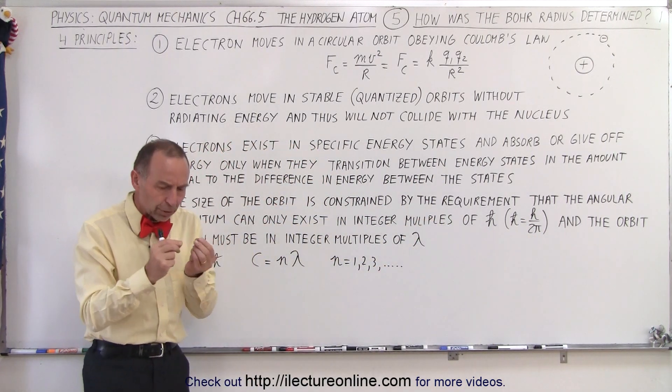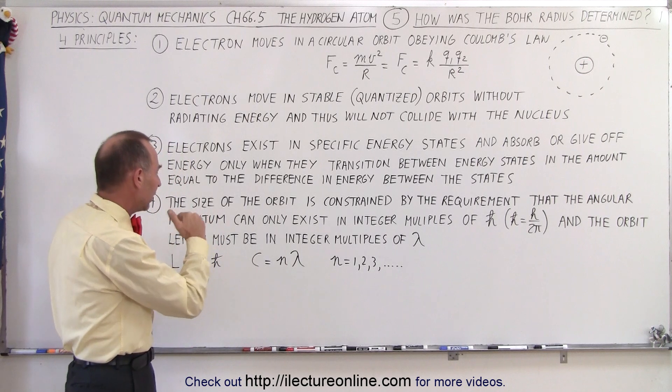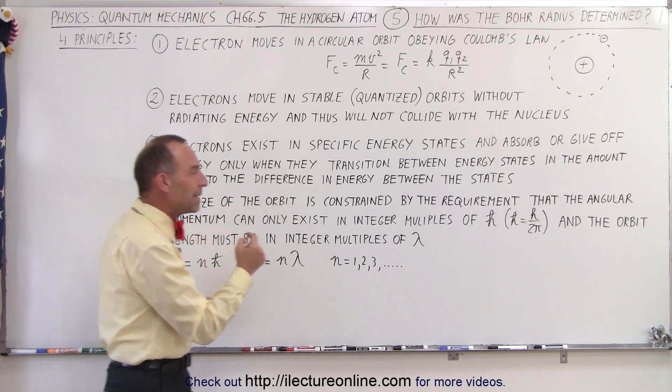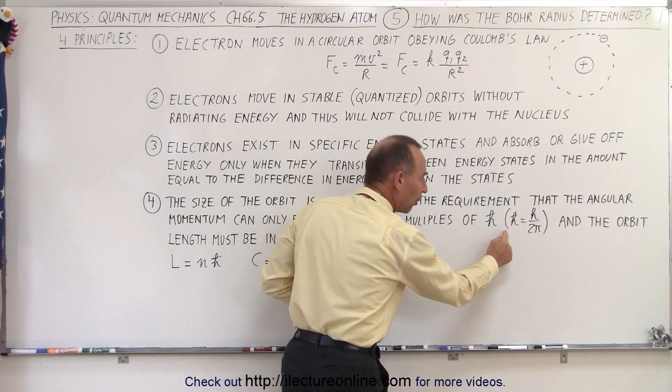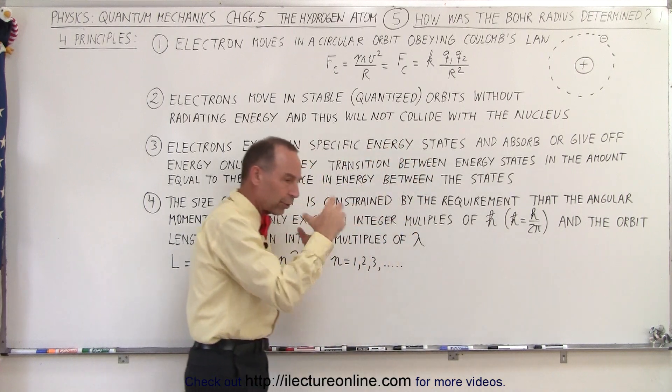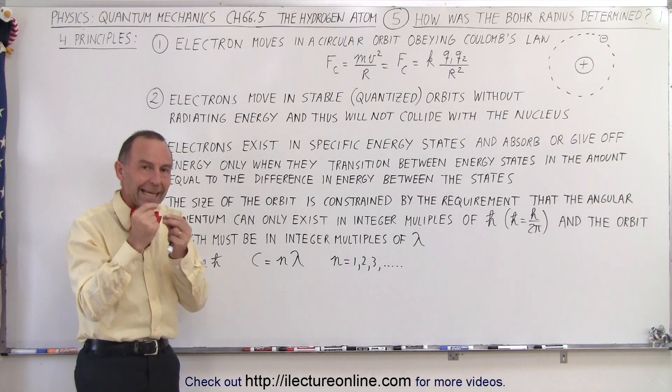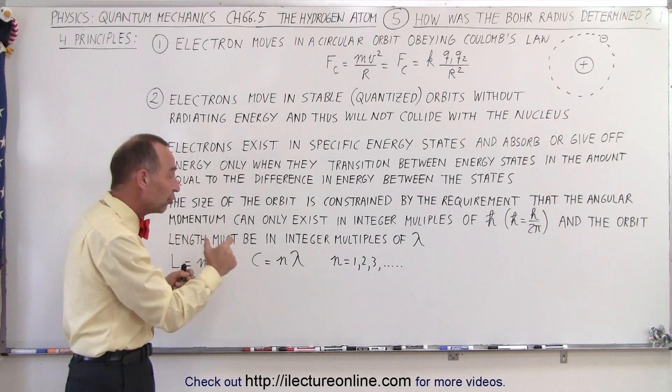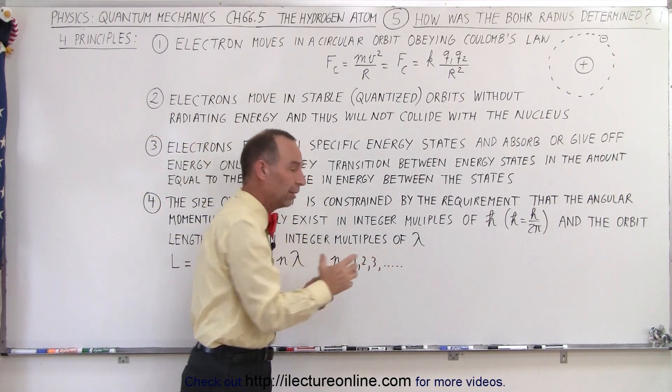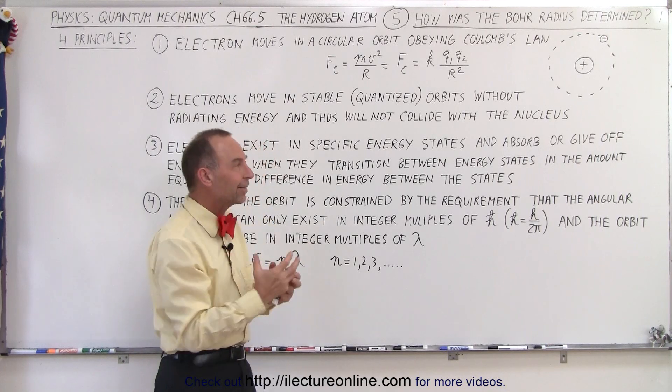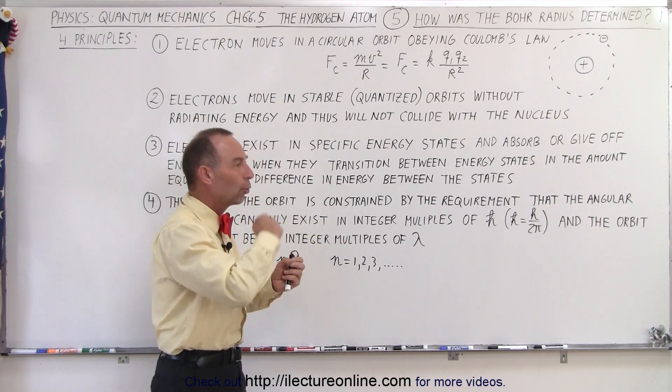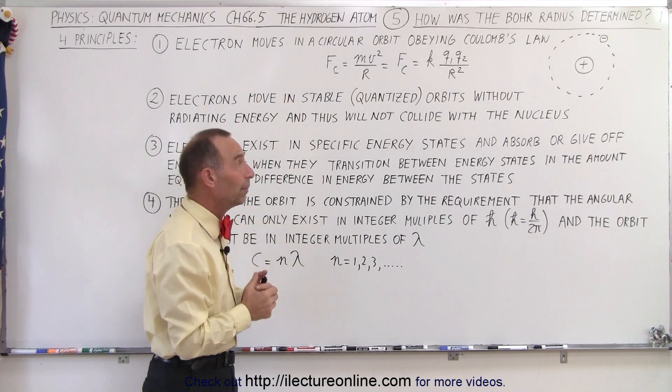Not only did we determine that the angular momentum had to be in integer numbers of h-bar, so therefore in quantum states, we also determined that the length of the orbit had to be in integer multiples, in this case integer multiples of lambda. So the angular momentum was quantized, and the orbital length or circumference or radius was quantized as well.